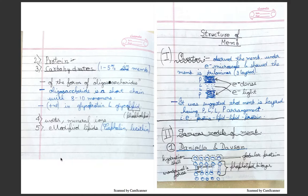The structure of membrane: First structure was given by Overton. He observed the membrane under electron microscope and showed the membrane is tri-laminar, that is three layered. He showed that it was electron dense at the rear and in between it was electron light.